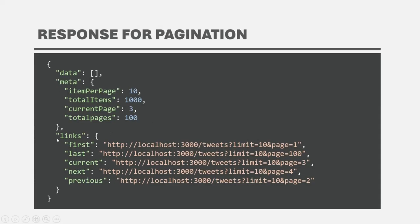Apart from the meta property, we are also going to have a links property. In this links property, we are going to have the important links which can be effectively used in the frontend for navigating the user from one page to another. First, we specify what will be the first page URL — if the user clicks on page one, a request will be made to this URL and the data will be fetched and displayed. We are also specifying the last link, so if the user directly wants to go to the last page, that link is also provided. We are also including the link for the current page, next page, and previous page, which is important for implementing the next and previous buttons on the UI.